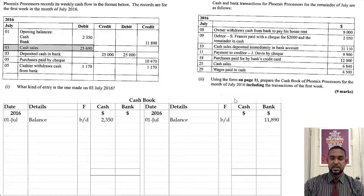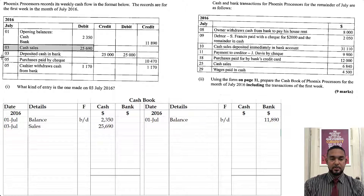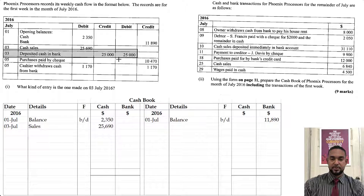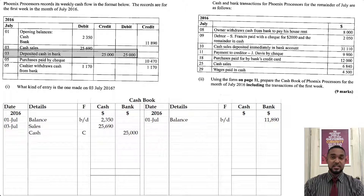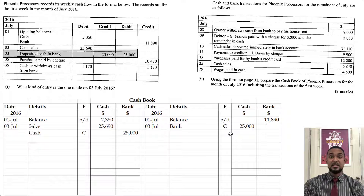Next we have cash sales — that's an increase in cash, so that's going to go on the debit side under the cash column. Then we have cash deposited in bank — 25,000. Bank is going to go up, so on the debit side under the bank column you're going to see 25,000. It came from cash, and you're noticing the C in the folio column, which indicates a contra entry. On the credit side, we took money out of cash — cash is decreasing. To record a decrease in an asset, you have to credit the asset account, and you'll see bank because that's where the money went, and C because it is a contra entry.